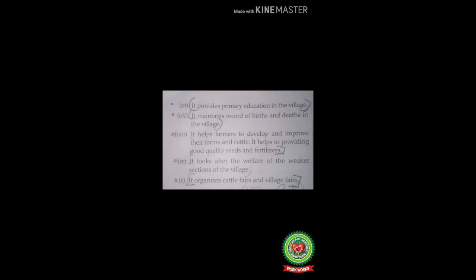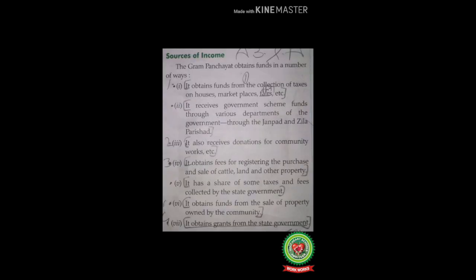Number eight: it helps farmers to develop and improve their farms and cattle by providing good quality seeds and fertilizers. Number nine: it looks after the welfare of the weaker sections of the village — the weaker sections means people who are not able to earn their livelihood. Number ten: it organizes cattle fairs and village fairs — 'fairs' means exhibitions, and cattle fairs means animal fairs. These are the important functions of the gram panchayat.